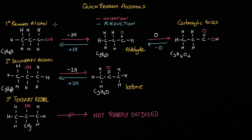In summary: a primary alcohol can be oxidised to give an aldehyde; an aldehyde can be oxidised to give a carboxylic acid; a secondary alcohol can be oxidised to give a ketone; but a tertiary alcohol does not readily undergo oxidation.